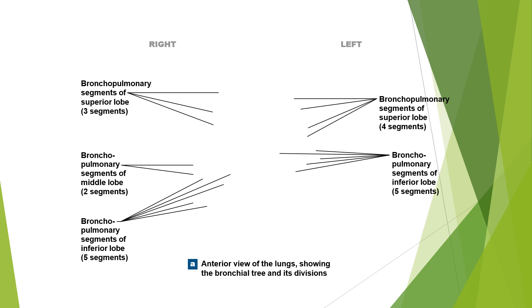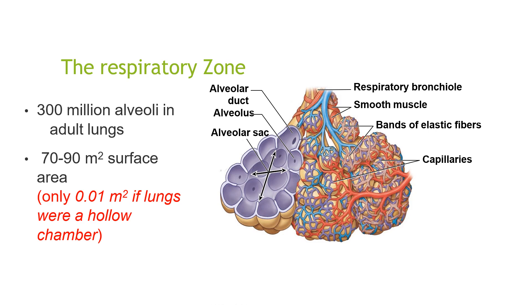Here you have the anterior view of the lungs, showing the bronchial tree and its divisions. Moving on to the respiratory zone, 300 million alveoli are present in the adult lungs with a surface area of 17–19 metres squared.